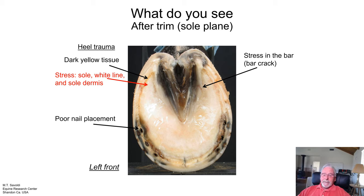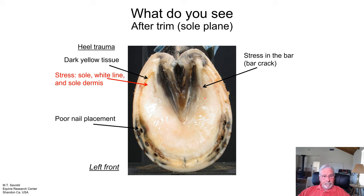Let's look at this crack right here — this is a bar crack developing. This is a kind of severe crack, and it's coming from the P3 bone loading the top of the bar. The bars are always weight bearing.